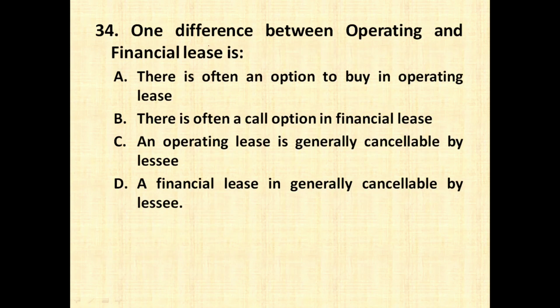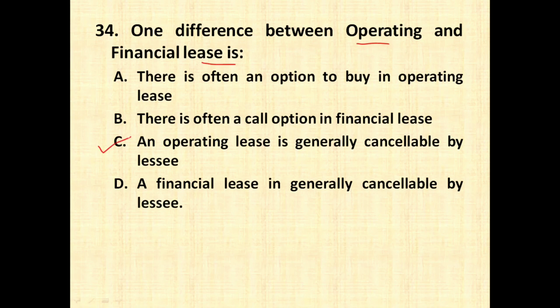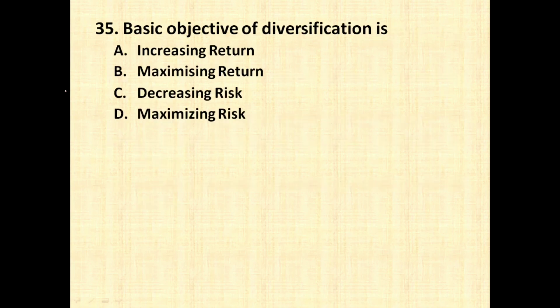The next question: one of the differences between operating lease and financial lease. In an operating lease, ownership is always with the lessor; in a financial lease, ownership is transferred to the lessee at the end. In an operating lease, all risk and rewards remain with the lessor; in a financial lease, they are with the lessee. One major difference: an operating lease contract is cancellable by the lessee, but a financial lease cannot be cancelled.